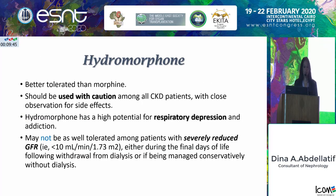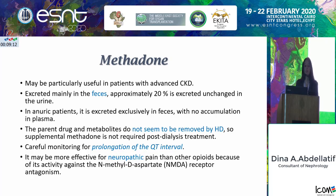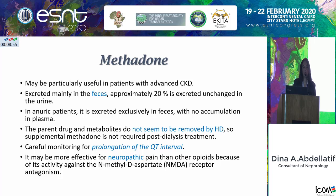Hydromorphone is better tolerated than morphine, which we avoid in CKD patients. It should be used with caution and close observation for side effects. Hydromorphone has a high potential for respiratory depression and is removed with dialysis, so it's not advisable for anuric patients not on dialysis. Methadone is useful in CKD patients — it is excreted mainly in the feces, not removed by hemodialysis, so no extra doses are required, but careful monitoring for QT prolongation is needed.